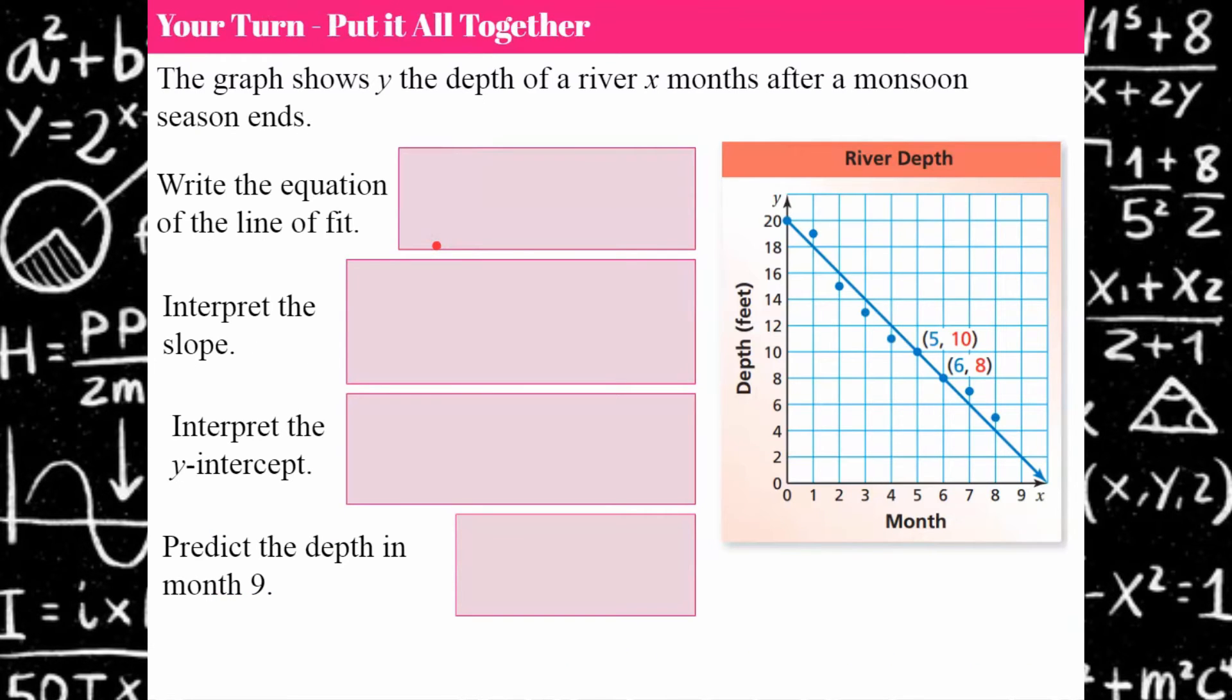So your turn, let's put this all together. We've got a graph here of the depth of a river after monsoon season ends. So we can see this is zero months, so this is just as soon as the monsoon ends, and then here we go nine months and something, 10 months after.